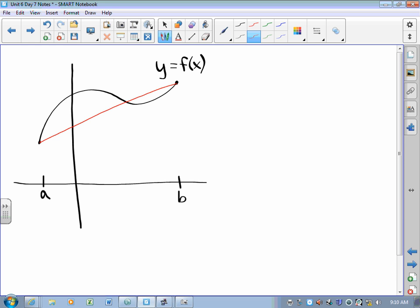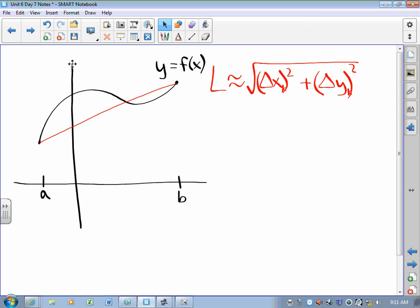I could say that the arc length is approximately equal to Pythagorean Theorem: square root of delta x squared plus delta y squared. The only problem with that is that it very obviously does not work. So I think, well, maybe one line segment isn't enough.